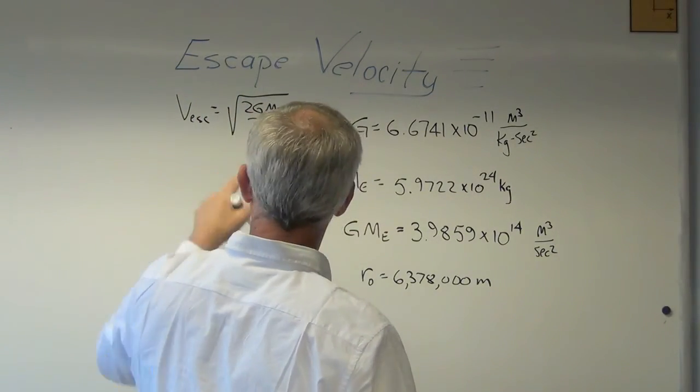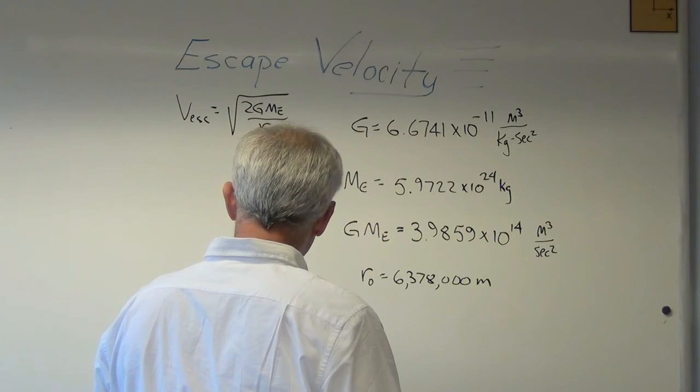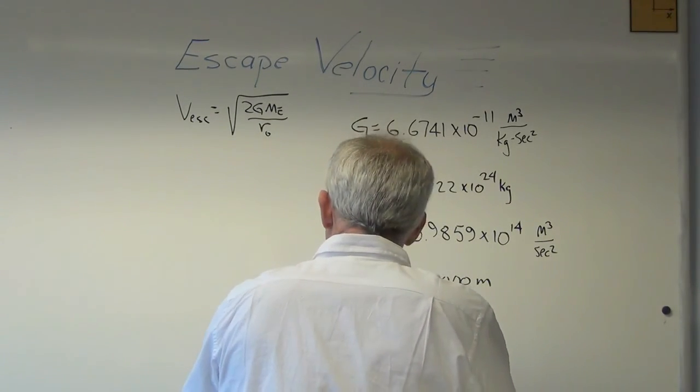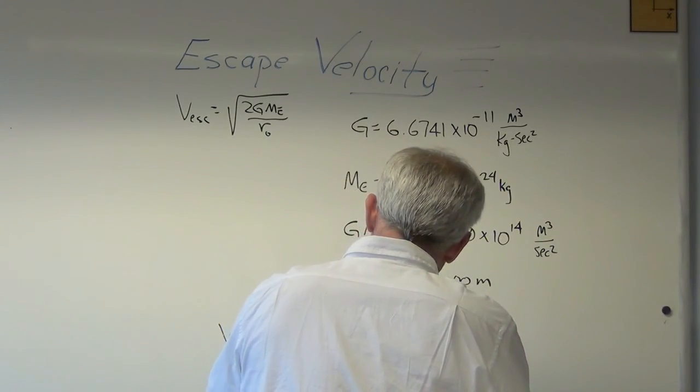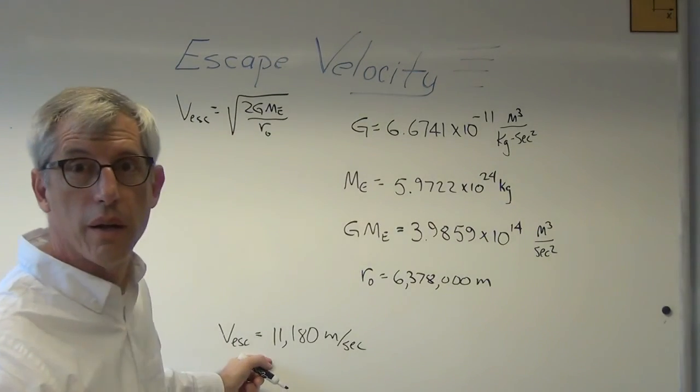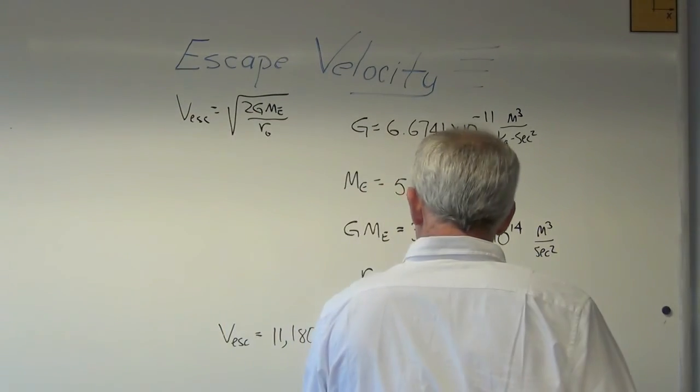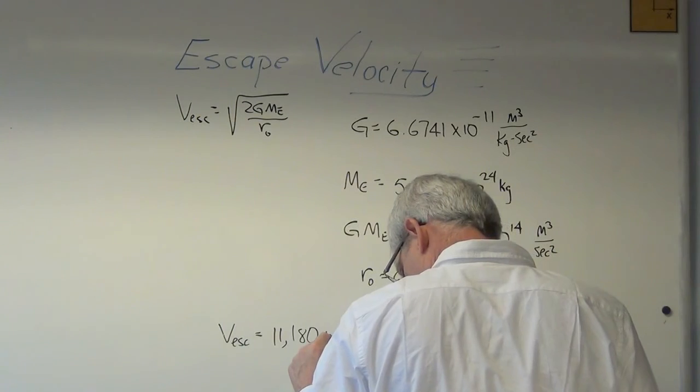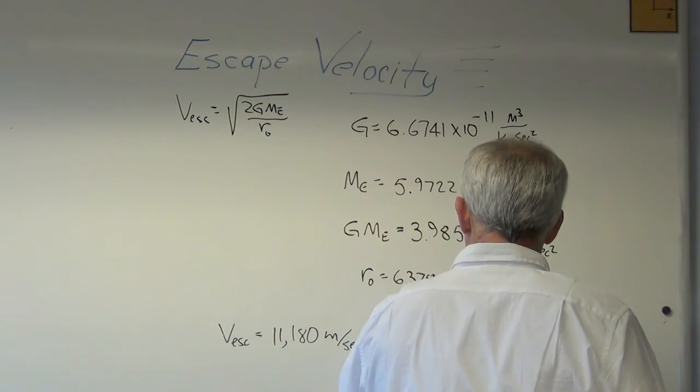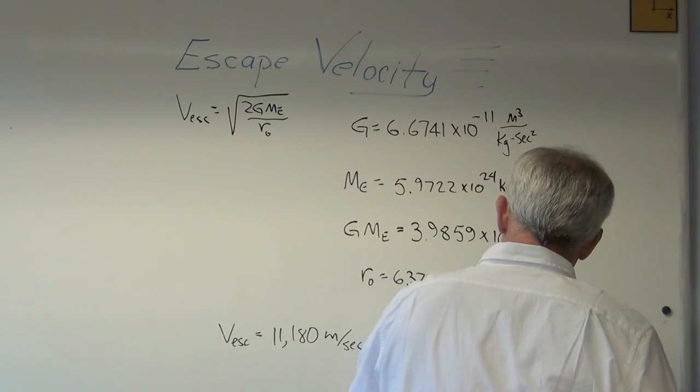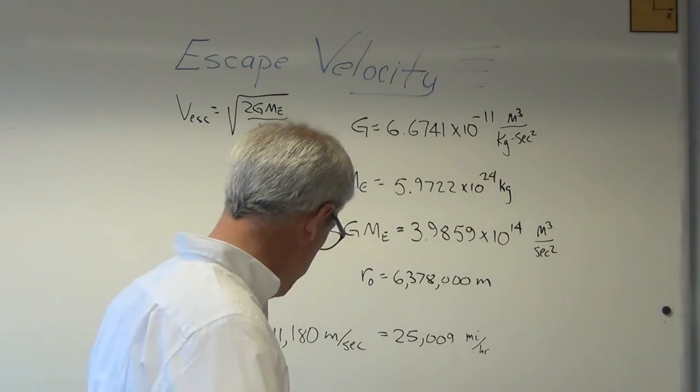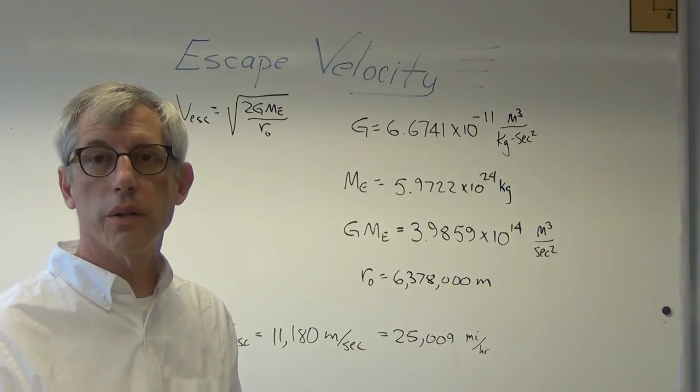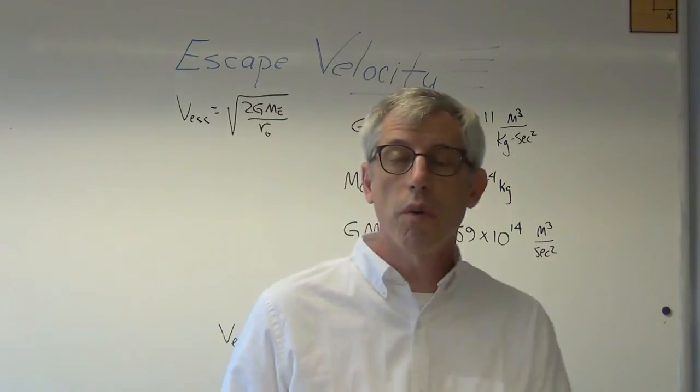All right. So if I got this right, if you plug all those numbers into the escape velocity expression, you get 11,180 meters per second. Well, is that right? Yeah, it turns out it is. But just in case you don't believe me, it turns out to be 25,008.99 miles an hour. So just in case you're like me and you've learned these numbers in old dinosaur units, there you go. It's 25,000 miles an hour, just like we suspected.